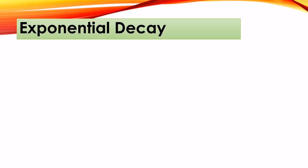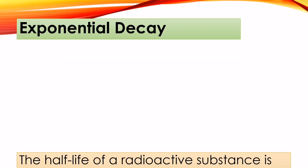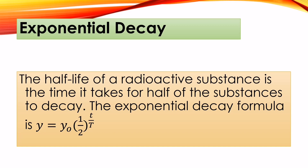Now let's discuss exponential decay. The half-life of a radioactive substance is the time it takes for half of the substance to decay. The exponential decay formula is y = y₀ · (1/2)^(t/T), where y₀ is the initial amount and the capital T is the unit of time (the half-life period).